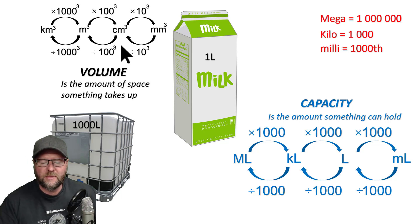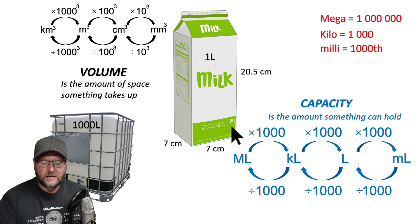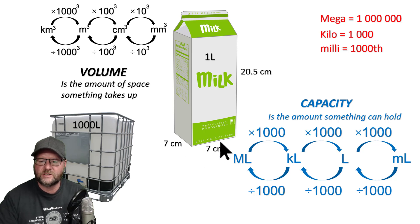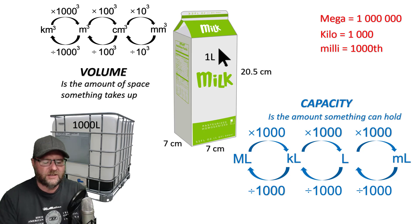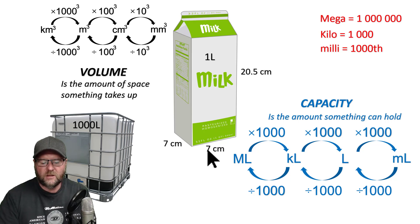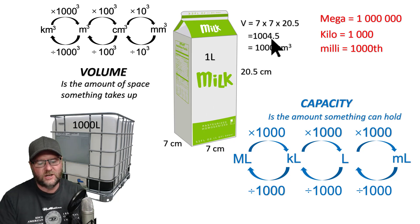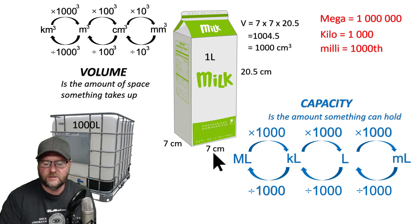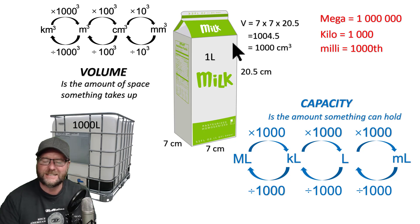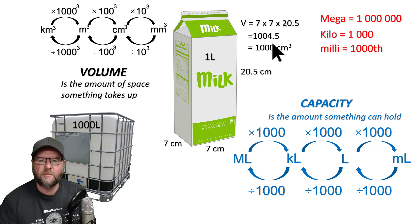How do you remember that? If you think about a one-liter container of milk, just roughly, think about the size of it. It's around about seven centimeters square and around about 20 centimeters tall. If you were to multiply those three together to get the volume in cubic centimeters — seven times seven times 20.5 — it works out to be just a shade over a thousand. So you can remember: one liter equals a thousand cubic centimeters.